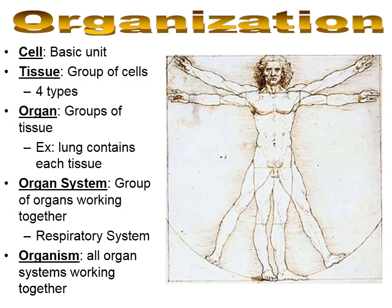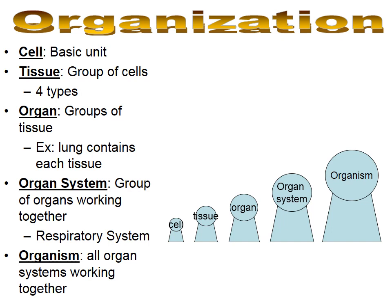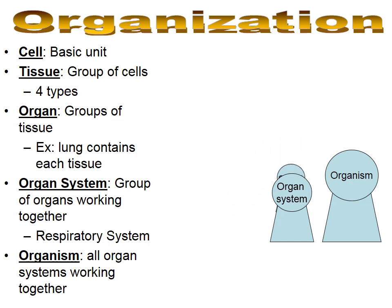Ultimately we come to the highest level of organization — the overall organism. The human body is made up of many organ systems working together: the nervous system, digestive system, endocrine system, respiratory system, circulatory system, reproductive system, and more. A helpful analogy is Russian nesting dolls, where each level fits inside the next: cells make up tissue, tissues make up an organ, organs make up an organ system, and several organ systems make up one organism.